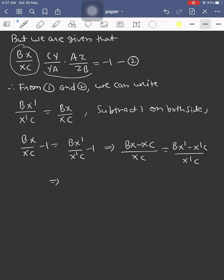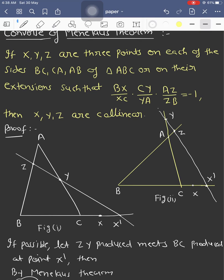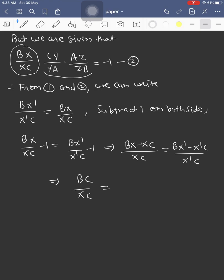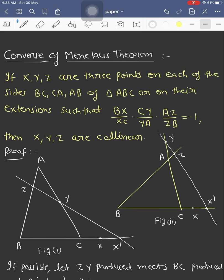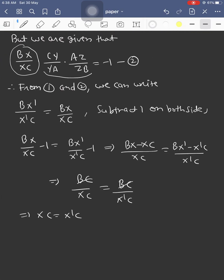Look at the diagram. BX - XC is BC, therefore the first ratio becomes BC/XC. And for the second ratio, BX' - X'C is again BC/X'C. This implies XC = X'C, which implies X'C - XC = 0.